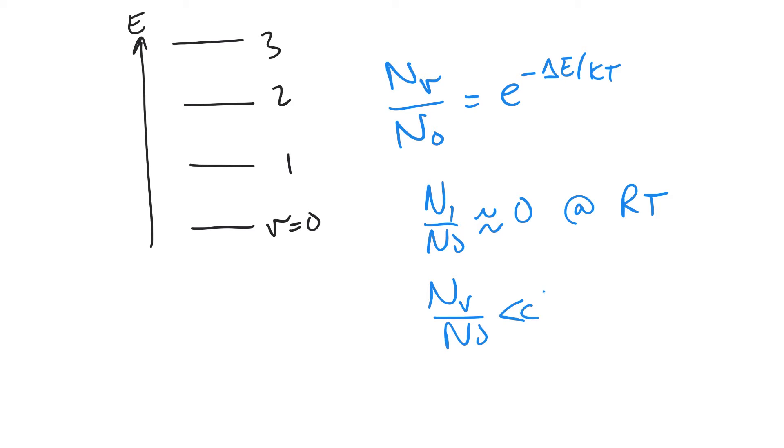If we go ahead and look at those energy levels again, we've got this very nice ladder. So this is V equals 0, 1, 2, 3. The Boltzmann equation says that the number in each level compared to the number in the ground state is equal to e to the minus ΔE over kT. And what we find, actually, is that N1 over N0 is approximately equal to 0 at room temperature. And any higher ones, basically, are much, much less than 1 and are essentially just equal to 0 at room temperature.